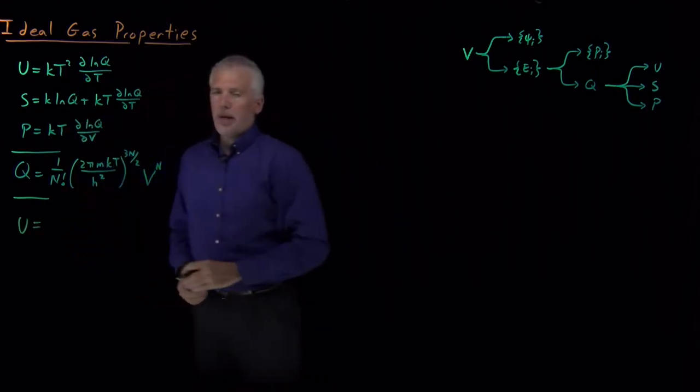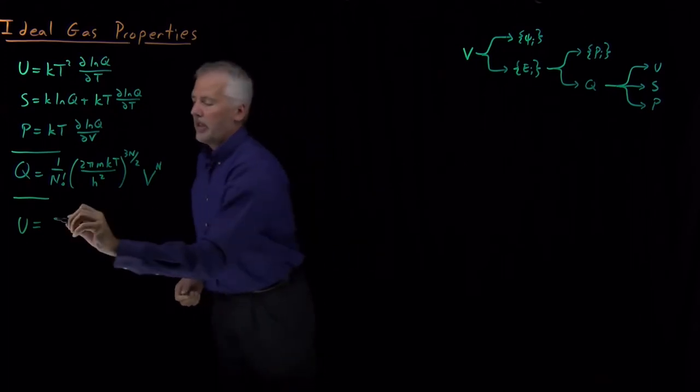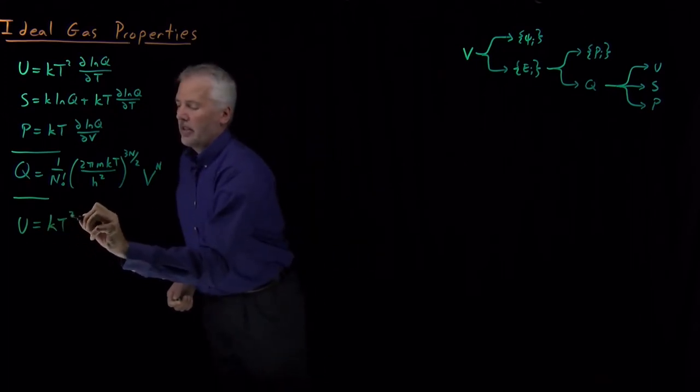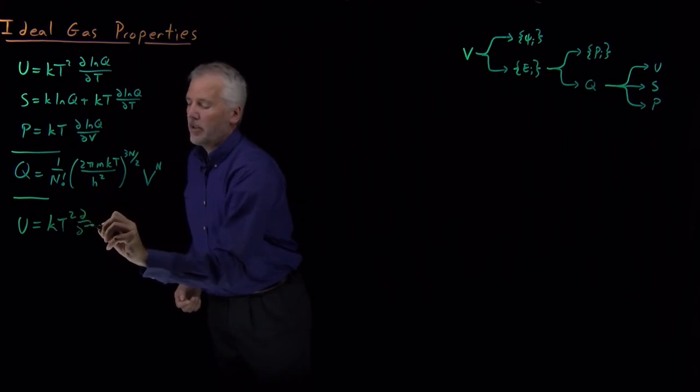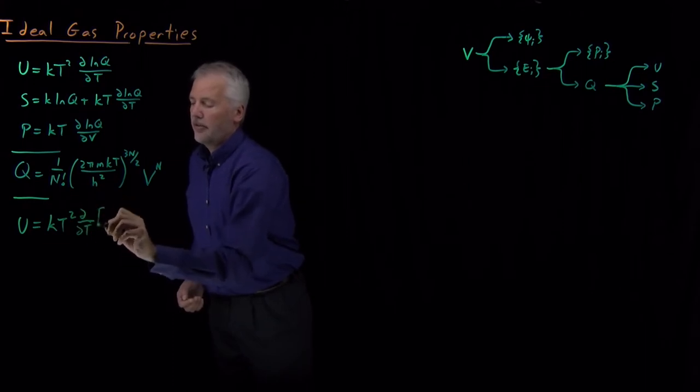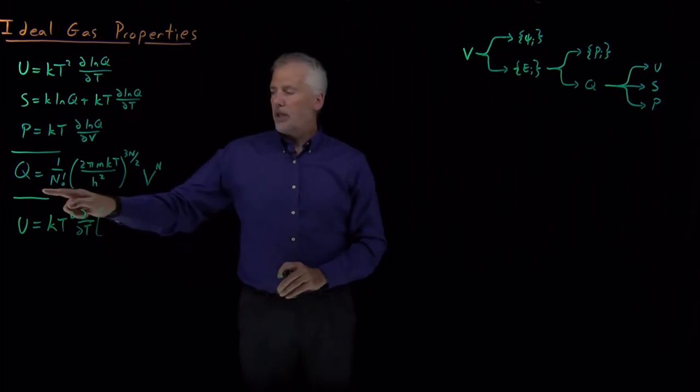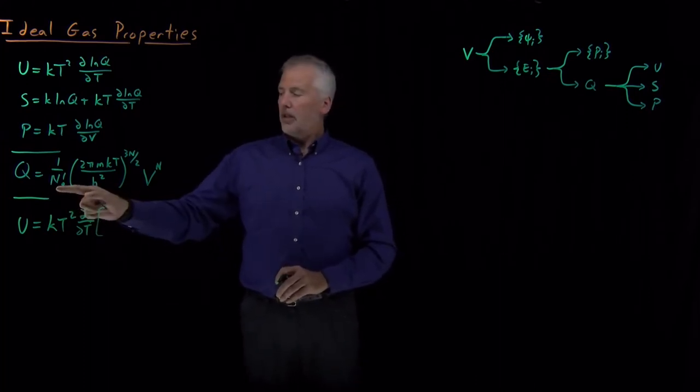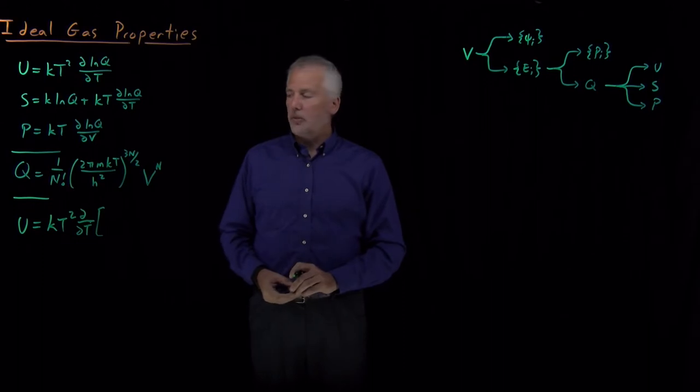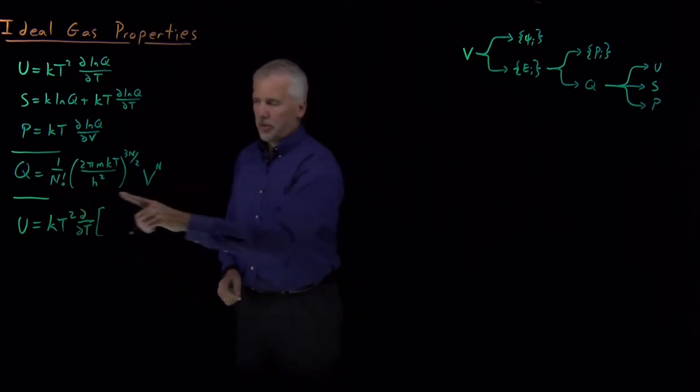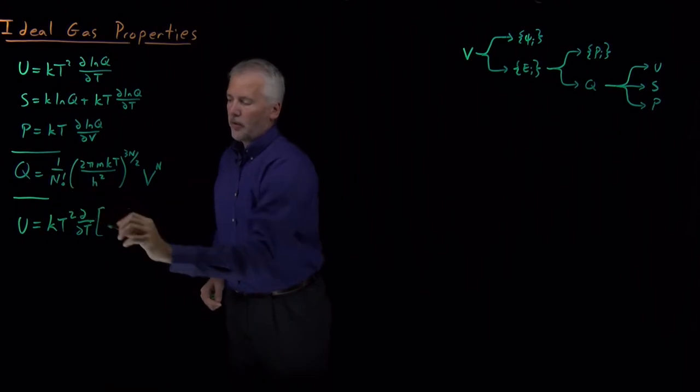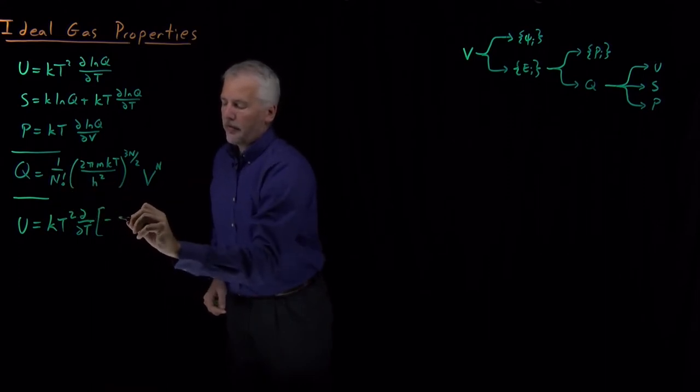So using that thermodynamic connection formula, which tells us that the energy is kT squared times d log q dt, or the temperature derivative of log q. So I need to be able to take log of this partition function. Luckily that's just product of a bunch of different terms, so the log is the sum of the logarithms of the terms that are multiplied together. So I've got log of 1 over n factorial, which I can write as minus log of n factorial.